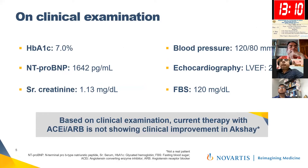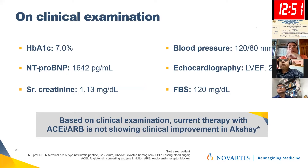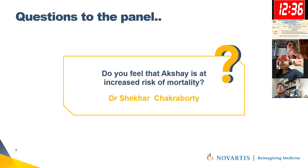On clinical examination, HbA1c is 7%, NT-proBNP is 1642 picograms per mL, creatinine is 1.13, eGFR around 70, blood pressure is 120/80, and ejection fraction has now deteriorated to 24% due to ongoing LV remodeling. Fasting blood sugar is 120. Based on this examination, current therapy with ACE inhibitor and ARB is not showing clinical improvement. I will ask Dr. Sekhar Chakraborty — do you feel this patient is at increased risk of mortality?